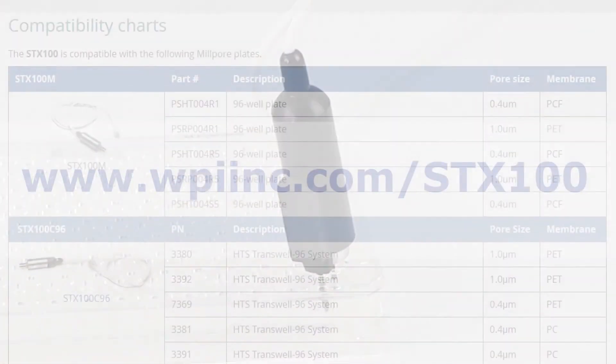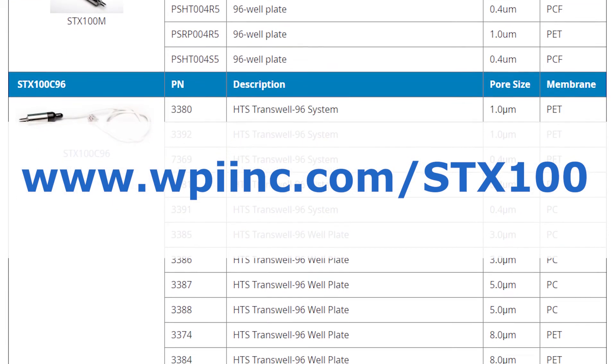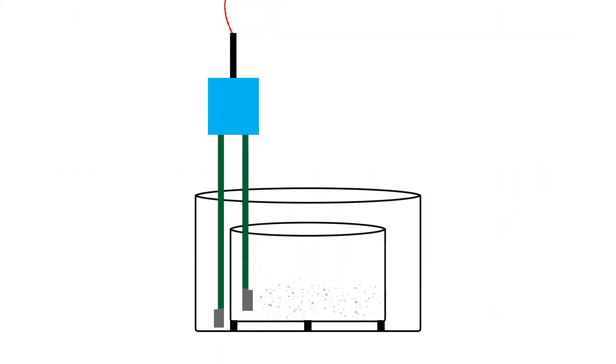Please refer to the STX100 compatibility chart on the WPI website. Using STX100 electrodes we can record resistance measurements inside a well plate. If you are concerned that your cells are loosely attached to the cell culture inserts and may get dislodged, STX100 electrodes may be a suitable choice for you.